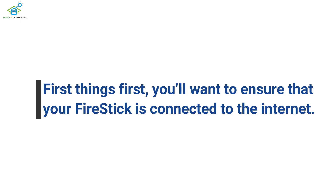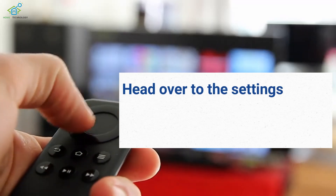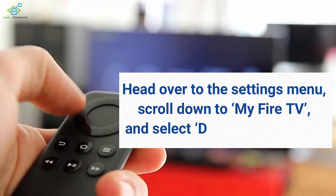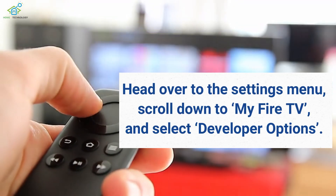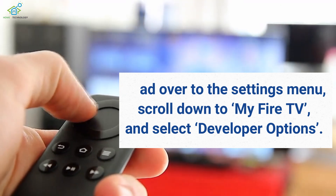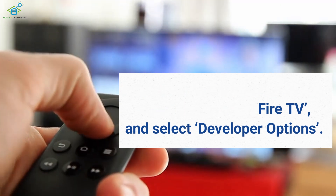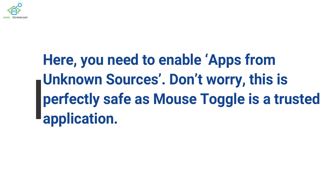First things first, you'll want to ensure that your Fire Stick is connected to the internet. Head over to the Settings menu, scroll down to My Fire TV, and select Developer Options. Here, you need to enable apps from unknown sources. Don't worry, this is perfectly safe as mouse toggle is a trusted application.